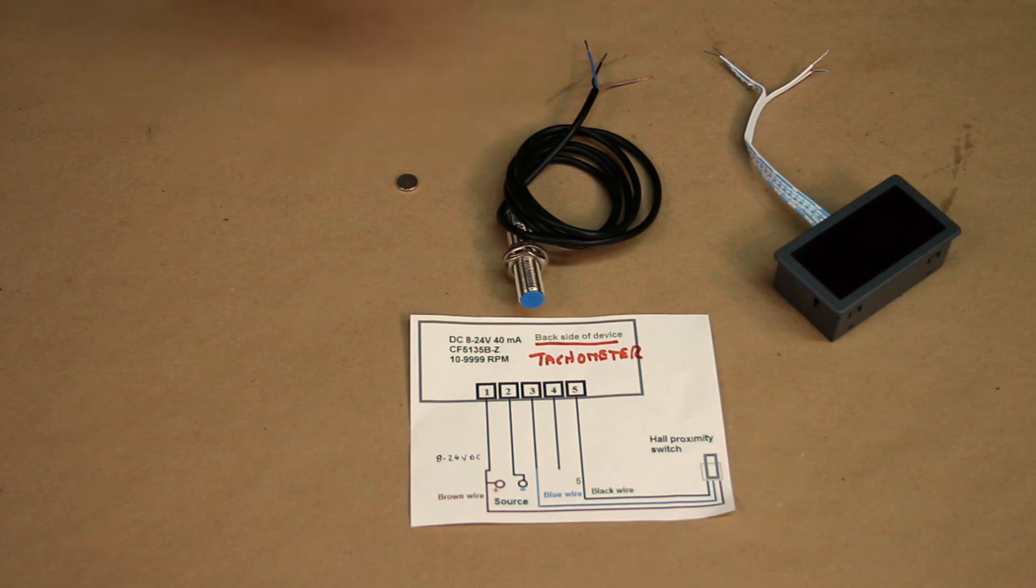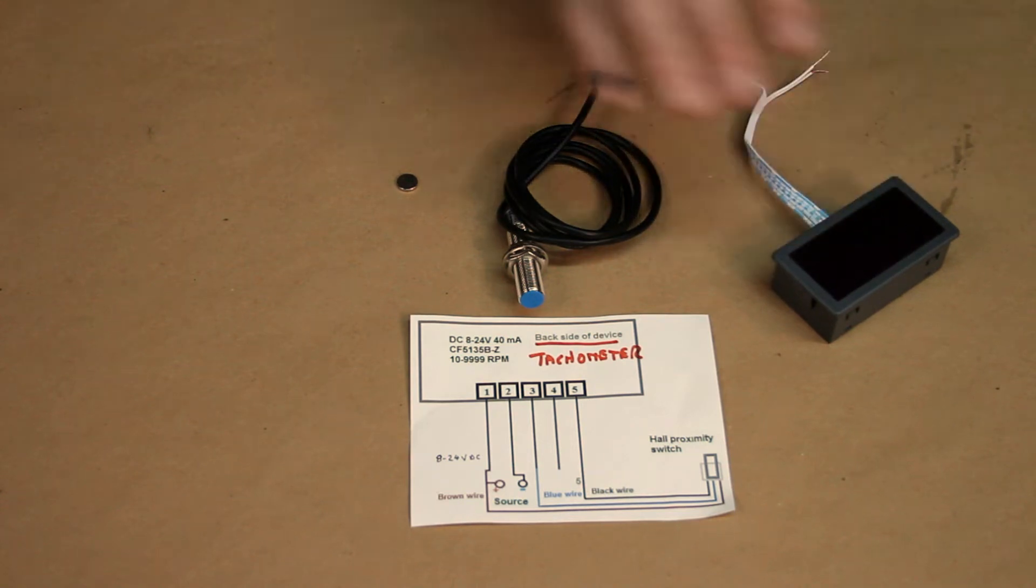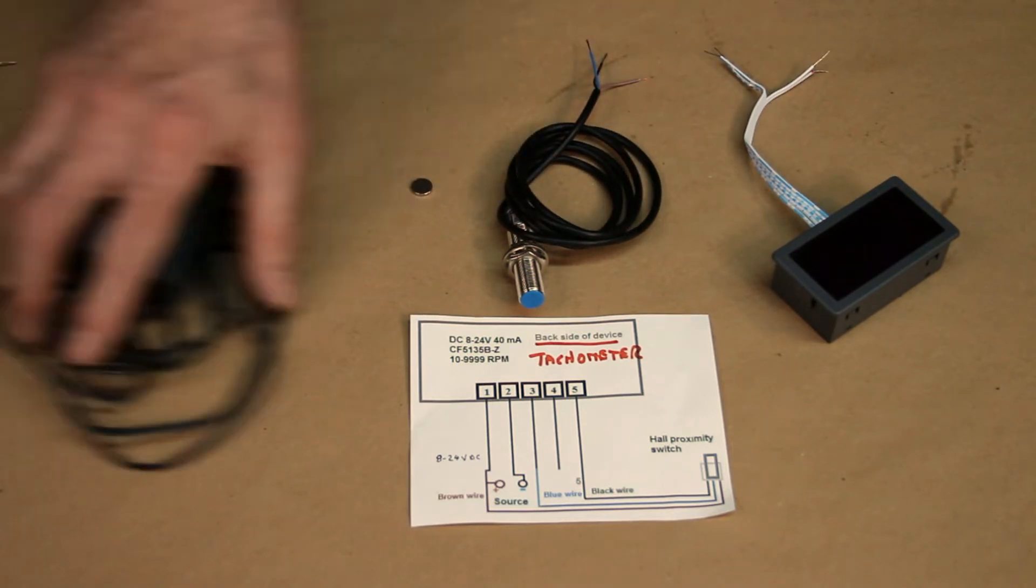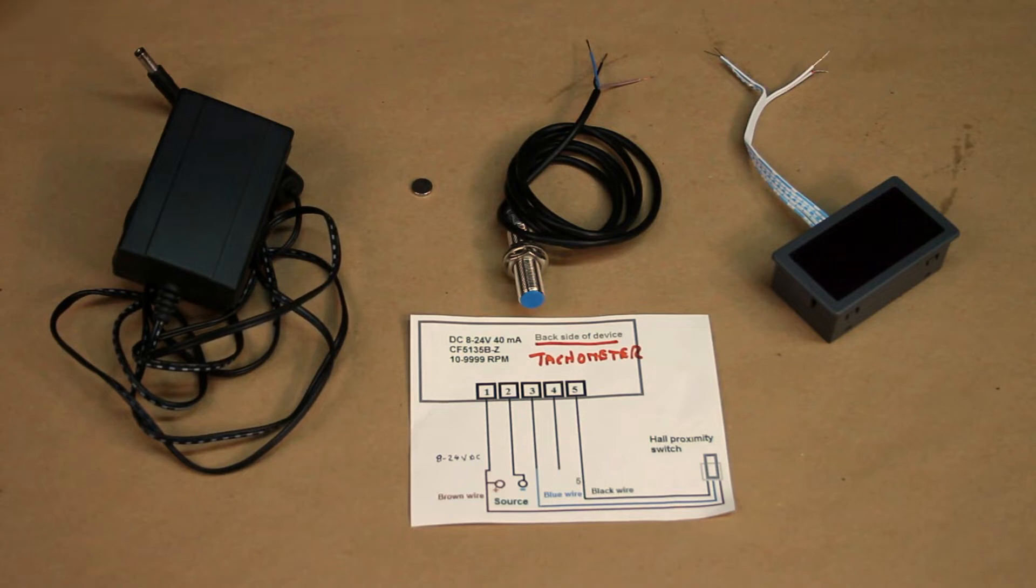So here's what you get when you buy a tachometer off the shelf. You get the display, you get the sensor, and you get a magnet. That's it. So you have to provide your own wall power adapter and some way of getting the power out of it. I like this barrel female adapter to wire option here. So give me a moment. I'm going to twist some wires together and show you how this works.